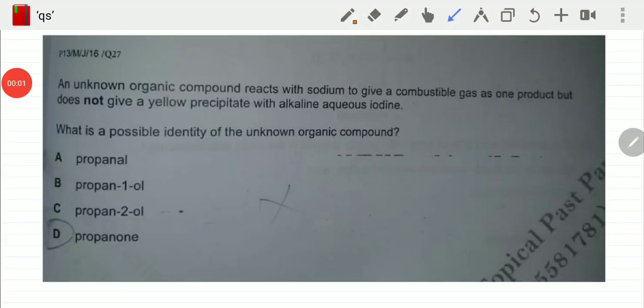The following question reads that an unknown organic compound reacts with sodium to give a combustible gas. So a combustible gas is being formed as one of the products and does not give a yellow precipitate with alkaline aqueous iodine.